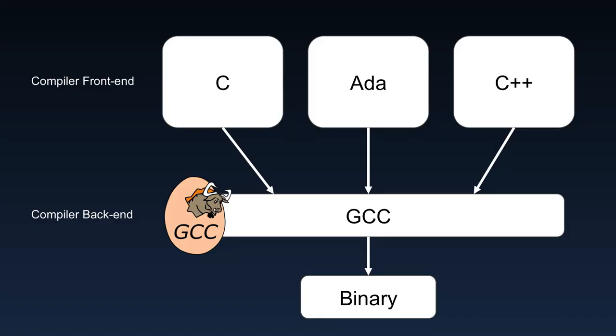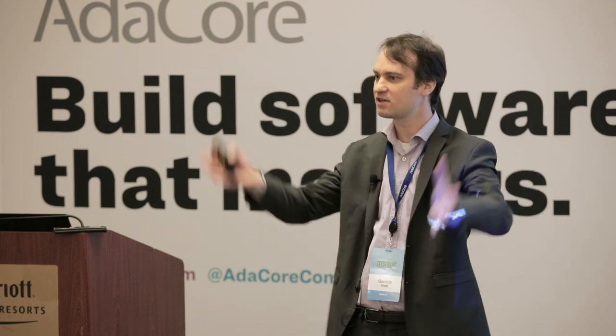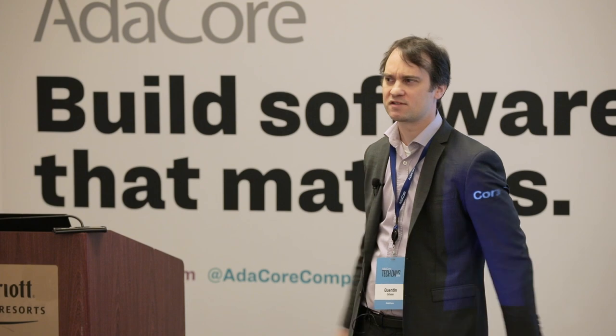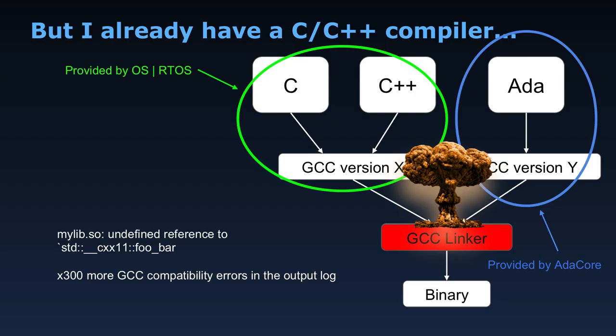Our technology today is based on GCC. Tomorrow we may have some LLVM components in the mix, but the idea remains the same. You might be asking: that compiler is based on GCC, it all integrates into the same intermediate language, these things are supposed to work together — why do I need the GCC from AdaCore? And it's quite possible you already have some C and C++ GCC-based environments coming from a different place.